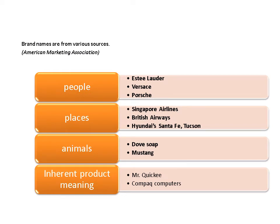There are many sources of brand names. It could come from the names of individuals or people, from location or places, or it can come from nature — like animals. It can also come from the inherited definition of the product. Examples of individual names include Porsche, Persius, and Estee Lauder. Places include Philippine Airlines, British Airways, Hyundai, Santa Fe, or Tucson. Animals include Ford Mustang. And some inherited definitions of the product, like Mr. Quickie or Compact Computers.